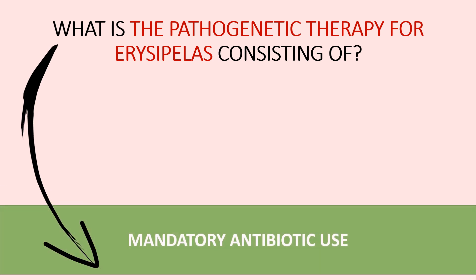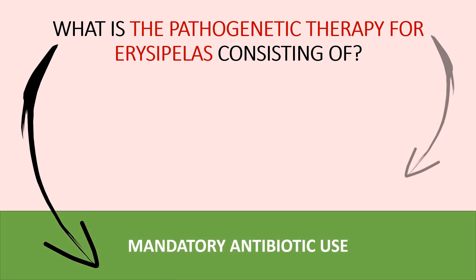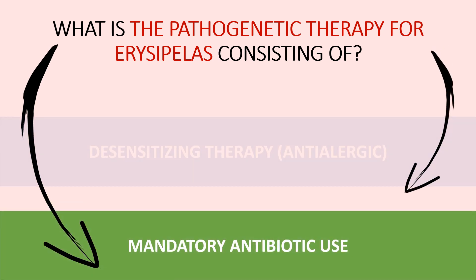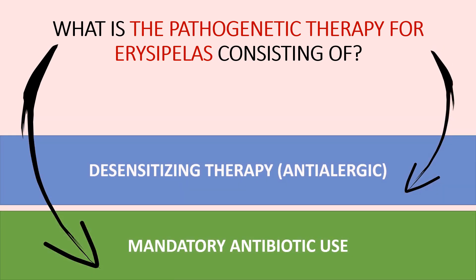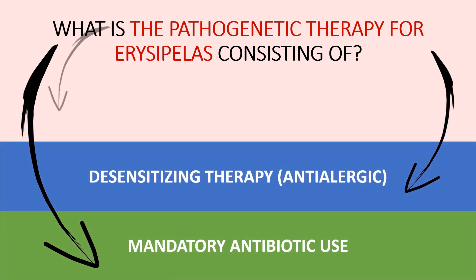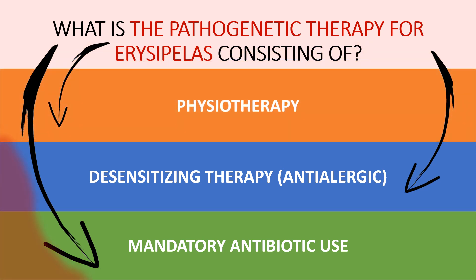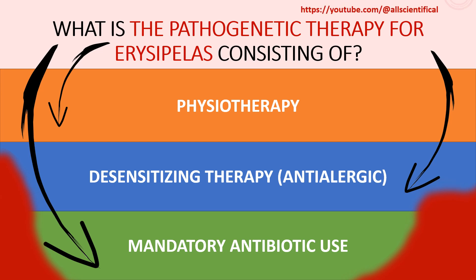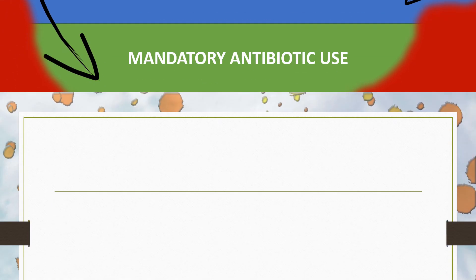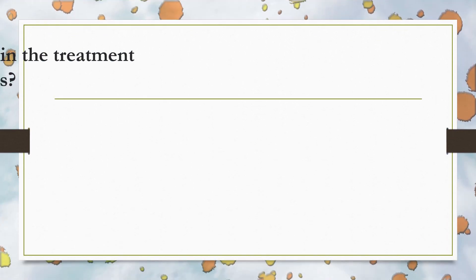What does the pathogenetic therapy of erysipelas consist of? Pathogenetic therapy consists of mandatory use of antibiotics, desensitizing (anti-allergic) therapy, and physiotherapy.